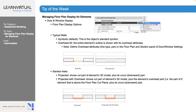For windows and doors, we might see things like projected, projected with overhead, symbolic, and overhead all. For our walls, we might see something like home story only, on all stories, specific stories, projected with overhead, or show projection like to floor plan range, to absolute display limit, or to entire element.